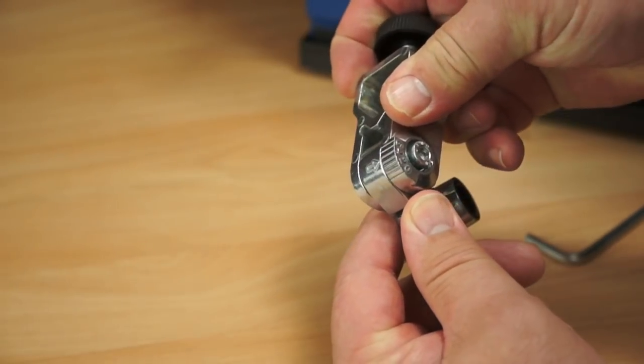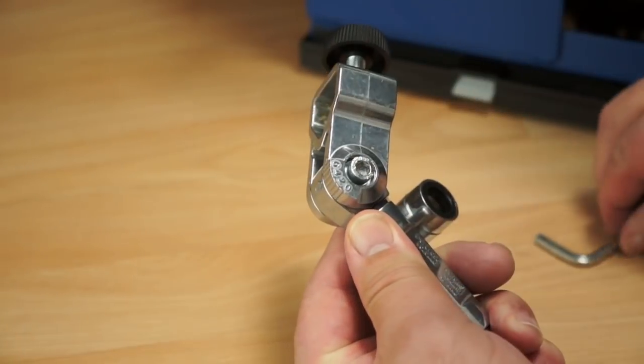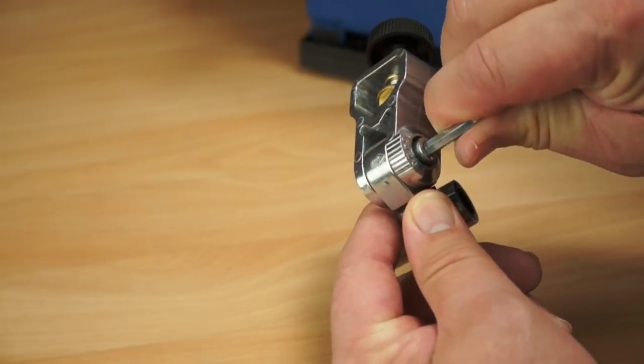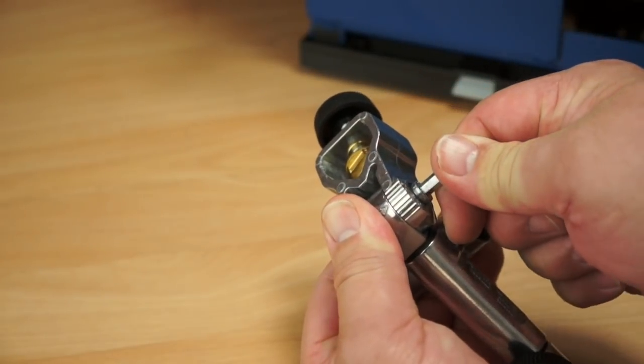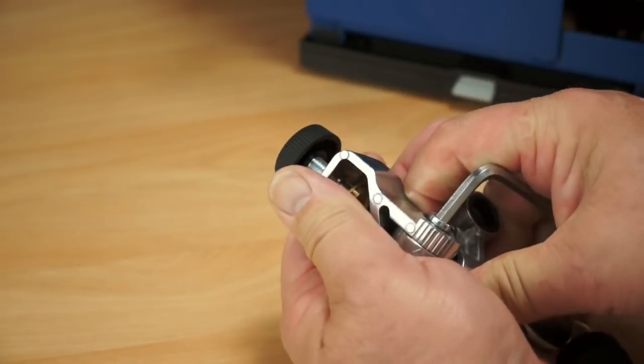The easiest way to keep our three variables the same every time we sharpen is to use the TTS-100 turning tool setter. We'll start by setting the jig to jig setting number 4.